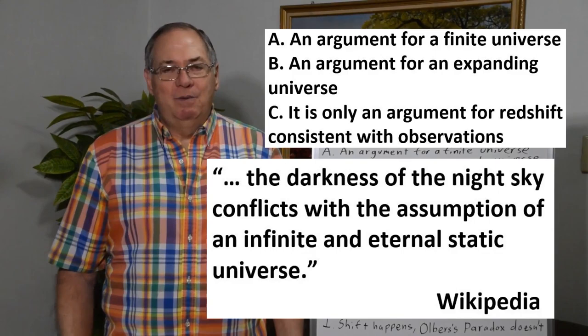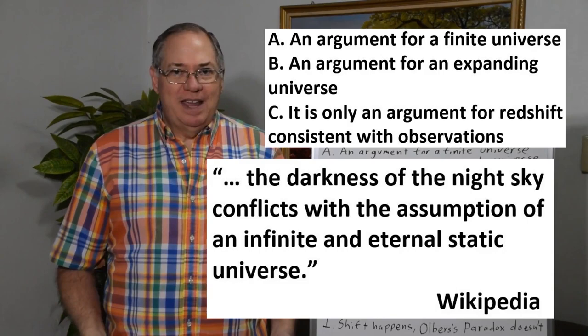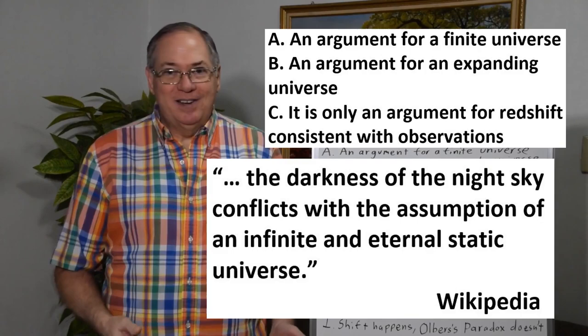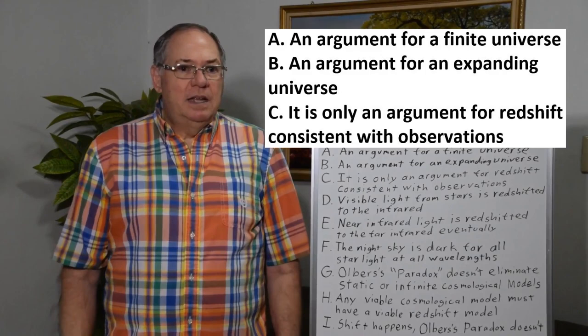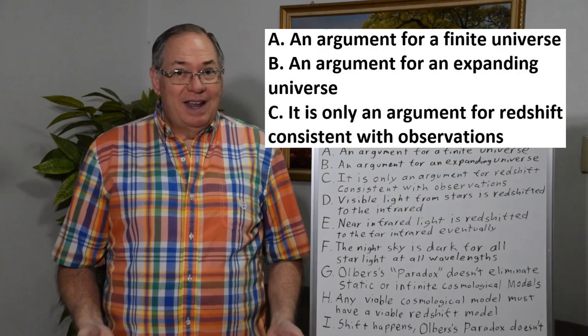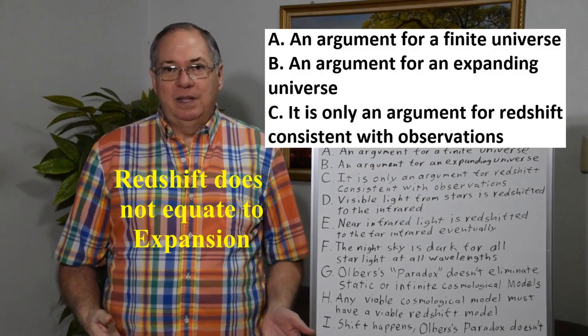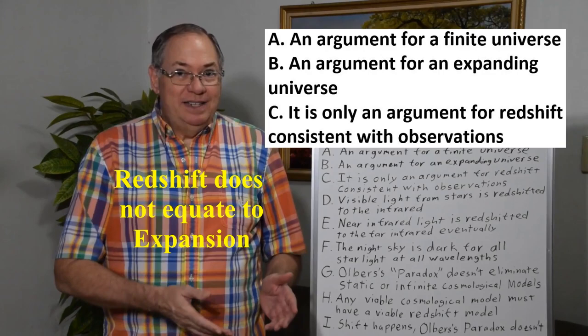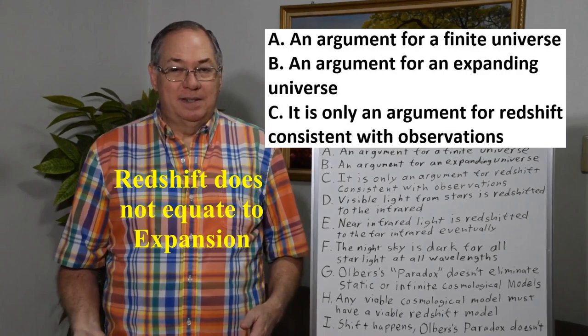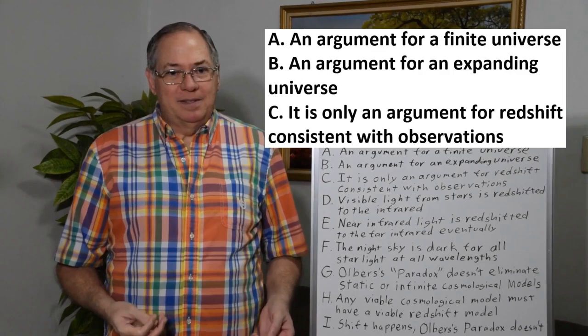The Big Bangers run the appropriate Wikipedia sections and they try to use whatever they can to prevent people from looking into an aesthetic and eternal infinite universe. It's also used as an argument for an expanding universe because they conflate Redshift with expansion. They don't seem to realize that Redshift is what we observe — expansion is a hypothesis, and as I show in other videos, a bad hypothesis.